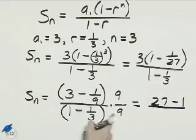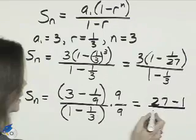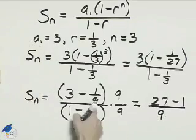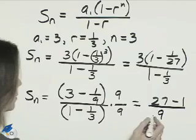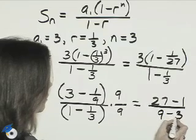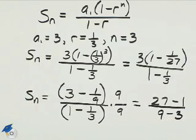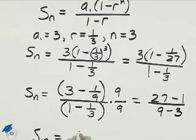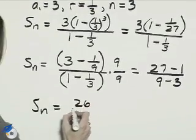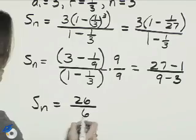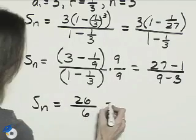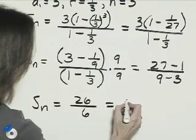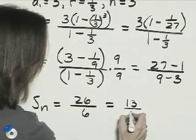In the denominator, 9 times 1 is 9, and 9 times 1 over 3 — the 3 and the 9 will reduce to 3. Now 27 minus 1 is 26, 9 minus 3 is 6, and we can divide 2 out of each of these, so we'll end up with 13 over 3.